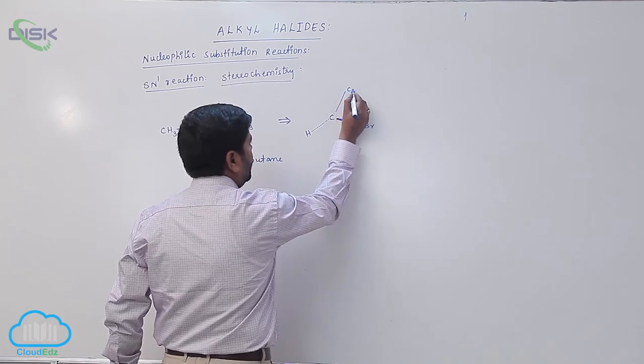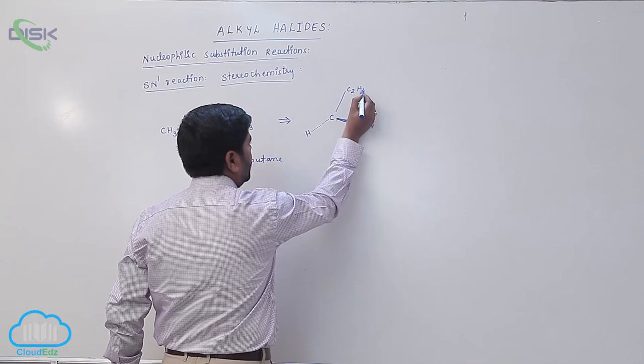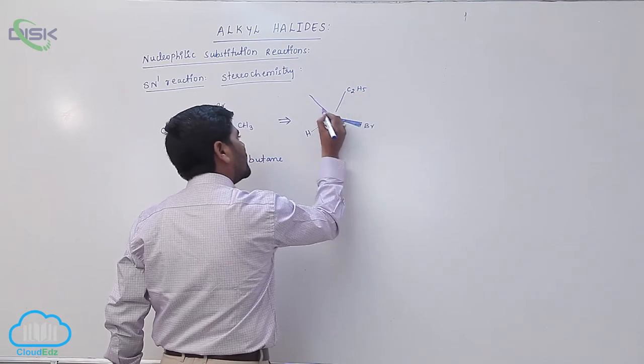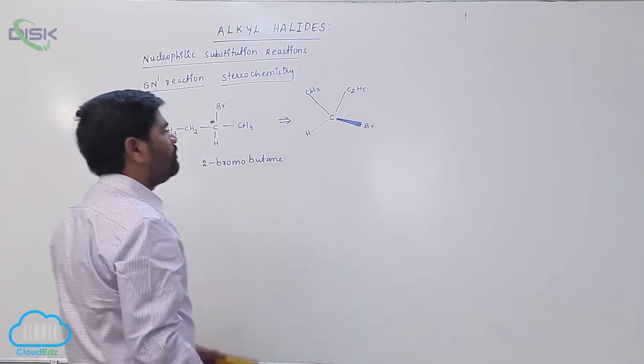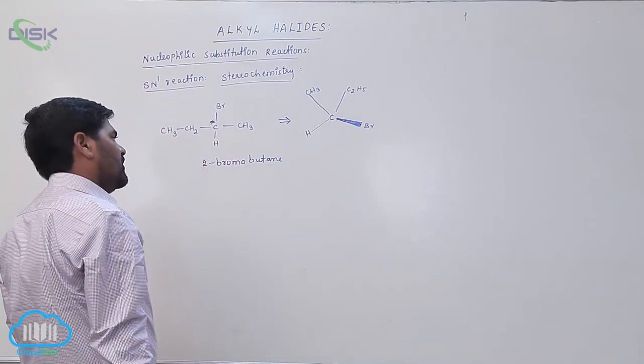Here is C2H5. Then here is which group? Methyl group. This is 2-bromo-butane. This is the representation of the molecule.